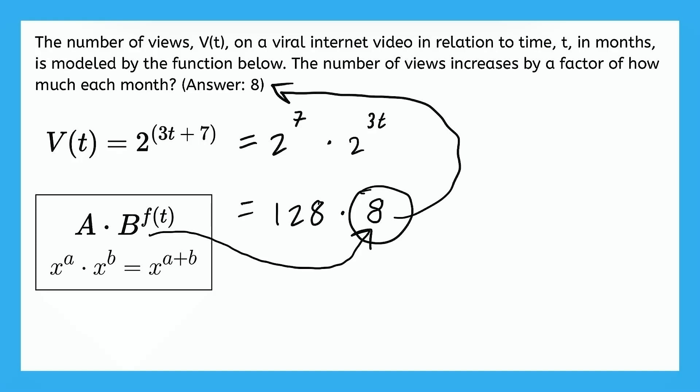Let me prove it to you by seeing what happens if we plug in 2 months for t instead of 1. You'll see that the number of views again increases by a factor of 8. Okay, so there's our new t, which is 2. 3 times 2 is 6. And 2 to the power of 6 is 64. So what did we do to get this 64? We just multiplied by 8. Again, we multiplied by a factor of 8.